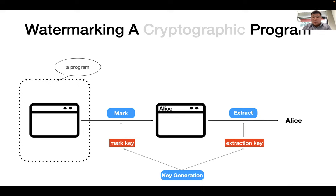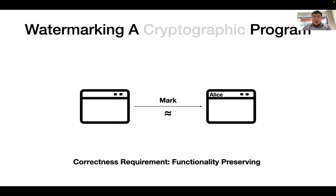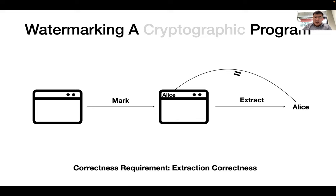Formally, a watermarking scheme consists of three algorithms: the key generation algorithm, which produces a pair of marking and extraction keys; the marking algorithm, which embeds a message into a program with a marking key; and the extraction algorithm, which recovers a message from a watermarked circuit using an extraction key. Correctness requires that the watermarked circuit should roughly preserve the functionality of the original program, and that the extraction algorithm can extract the correct message from an honestly watermarked circuit.